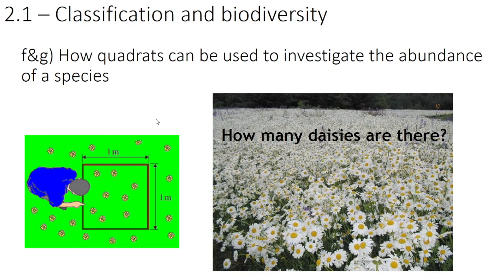Hi guys and welcome back to Ms Clark Does Science. Today we're moving on with our year 11 classification and biodiversity topic, looking at what quadrats are and how we can use these to investigate the abundance of a species. I left you hanging last time with how many daisies are in this picture. We're going to guesstimate that today using a quadrat technique.